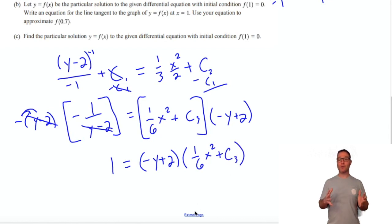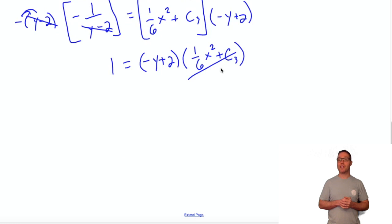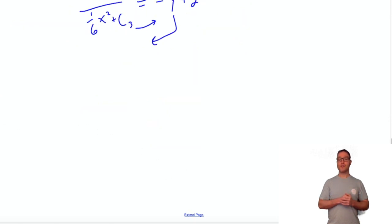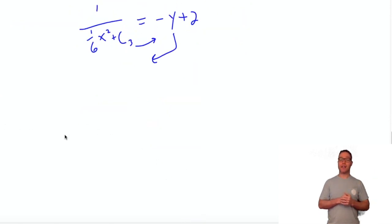I'm going to have 1 = -y + 2 times [(1/6)x² + c₃]. Now I want to solve this for y, get y by itself. I'm going to divide both sides by this term that has x and the constant in it: 1/[(1/6)x² + c₃] = -y + 2. Then I can just add 2 to the other side and also negate the other side. I'm adding y to the left-hand side and subtracting that complex fraction to the right-hand side. I'm going to have y = 2 minus this fraction. This is my general solution. It's not the nicest looking expression, but it's a general solution.